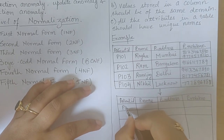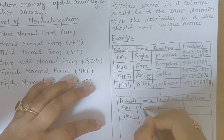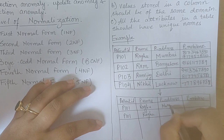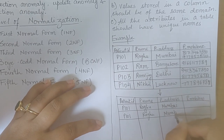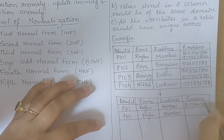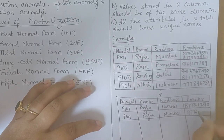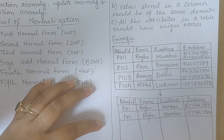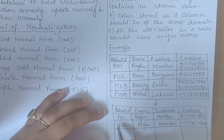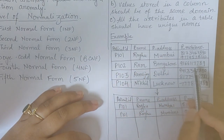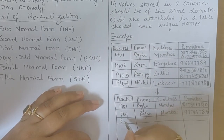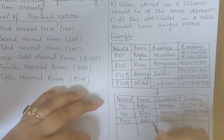For patient 101, we will create two tuples. So here it is: Ragu, Mumbai — and the two mobile numbers are made atomic by writing them in separate tuples. Now it is atomic, satisfying the first condition. For patient 102, Ram lives in Bangalore and has only one mobile number, so no problem. We write P102, Ram, Bangalore, and the single mobile number.